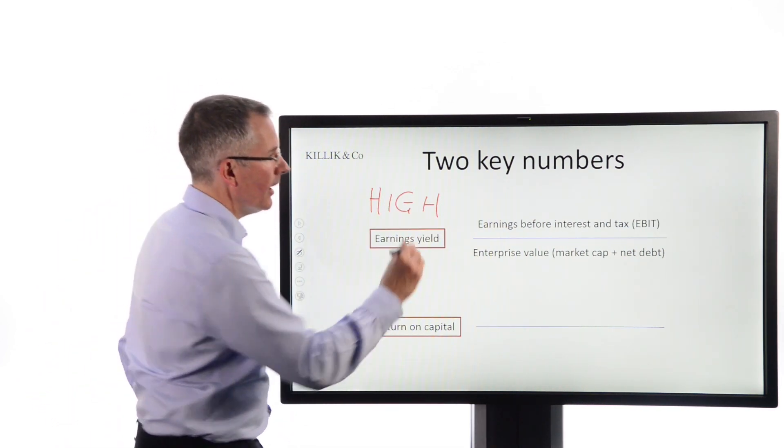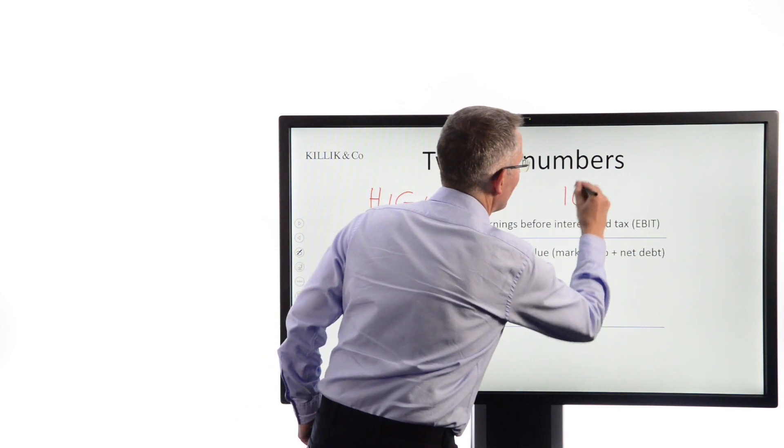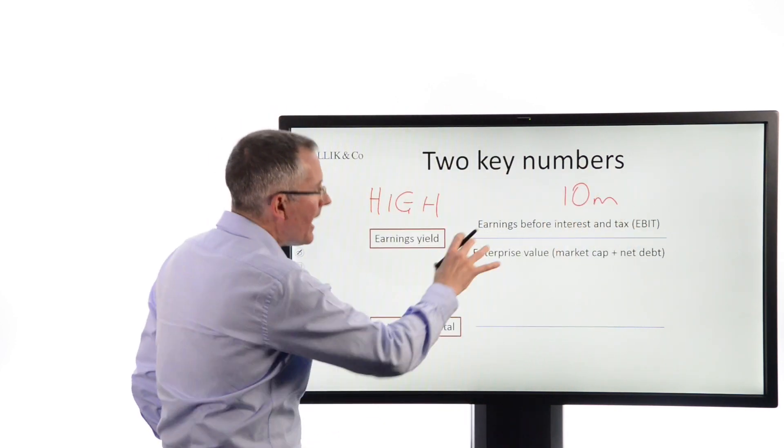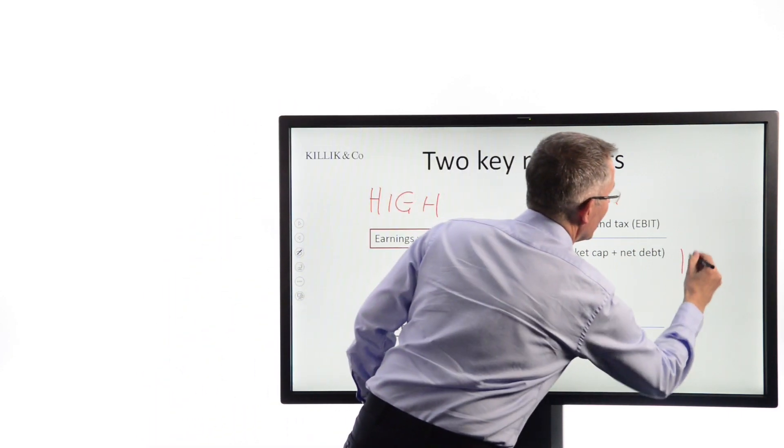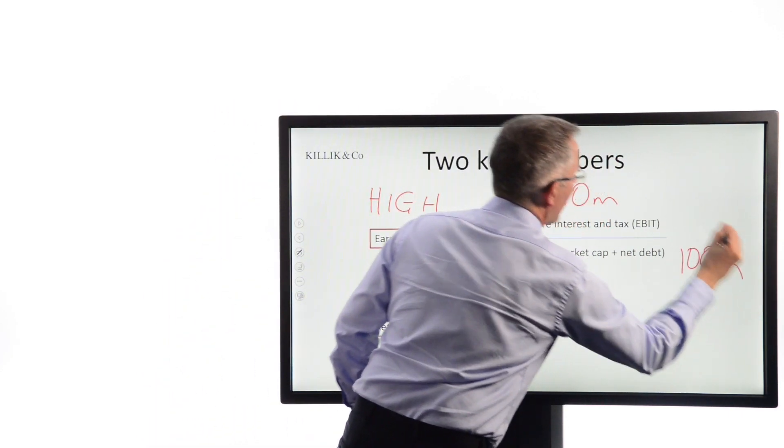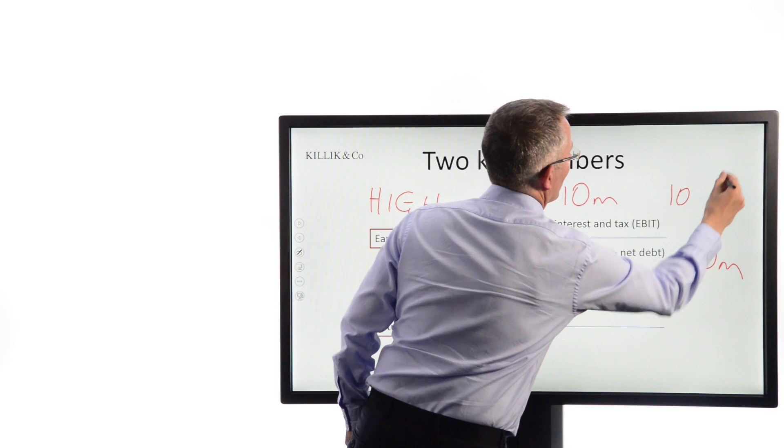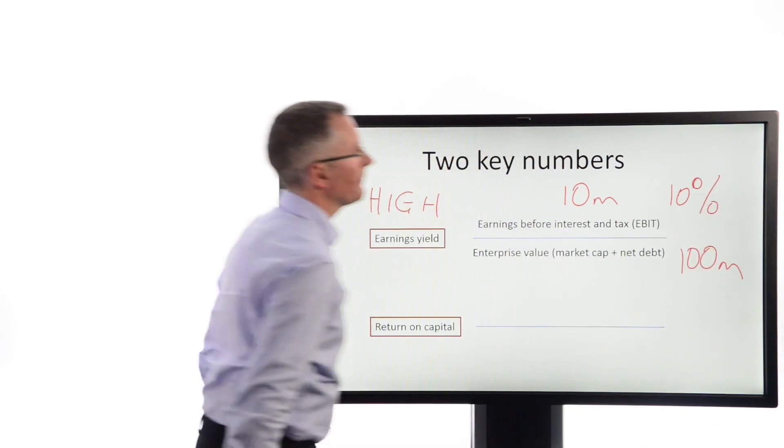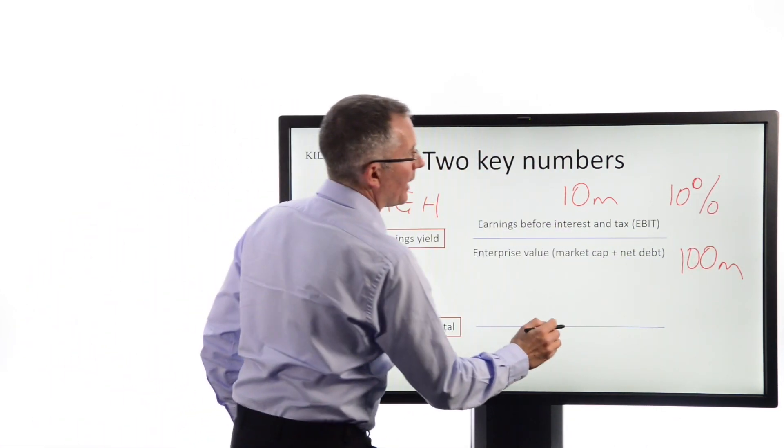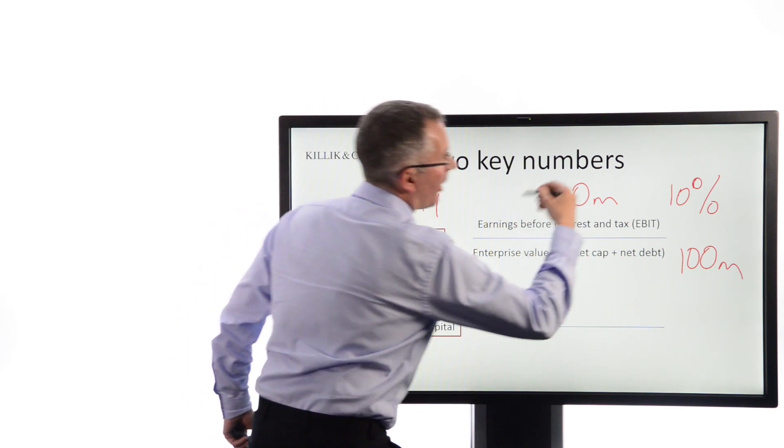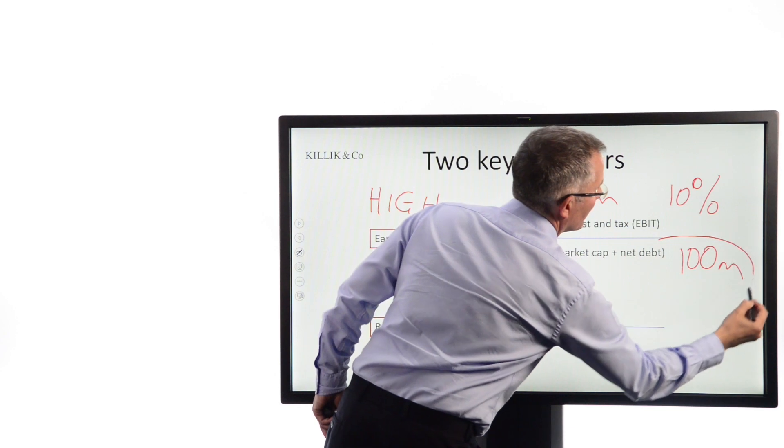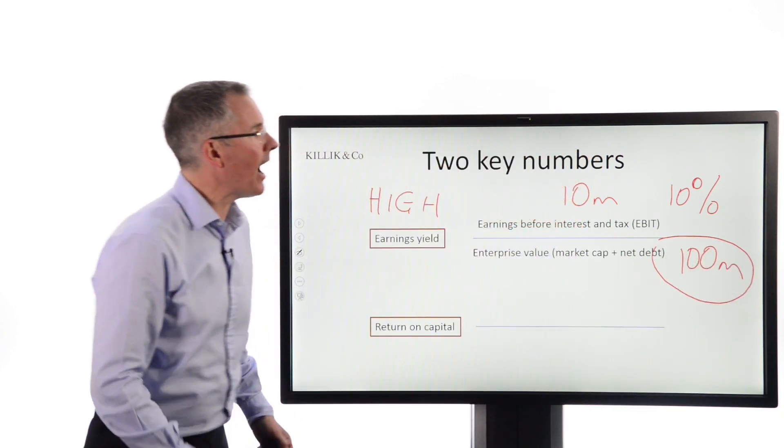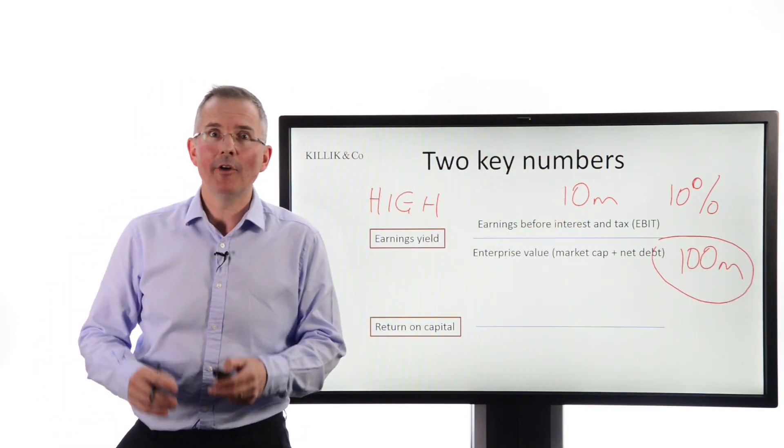And it's basically a way of screening stocks that are generating value. And the logic is supposed to be that if earnings before interest and tax is, say, 10 million, enterprise value, that's the value of the business, is 100 million, then the earnings yield that will come out of that would be 10%. The higher, the better. Why? Because, essentially, the higher that number, the cheaper you are able to pick up that rate of earnings.